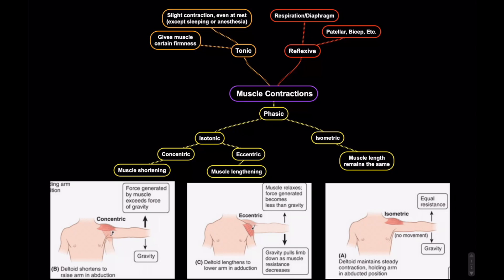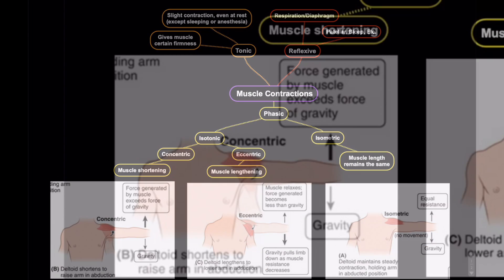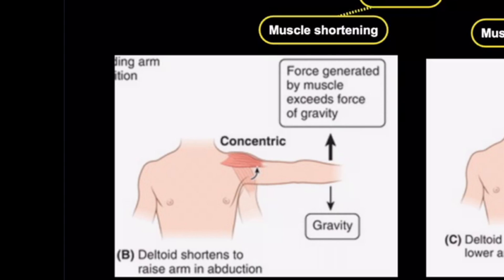There are two kinds of isotonic movements: concentric and eccentric. Concentric is when contraction produces a shortening of your muscle fibers. For example, in this picture, let's say you're raising your arm — you're abducting the arm — and you're using the deltoid muscle to abduct the arm. This muscle has fibers that are shortening, and the force generated by the muscle exceeds the force of gravity. That's called a concentric contraction.